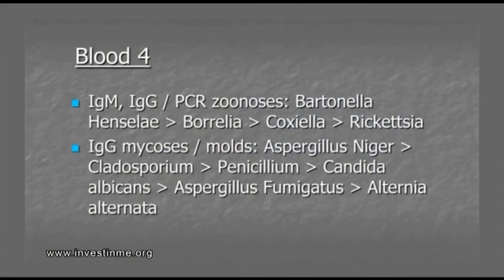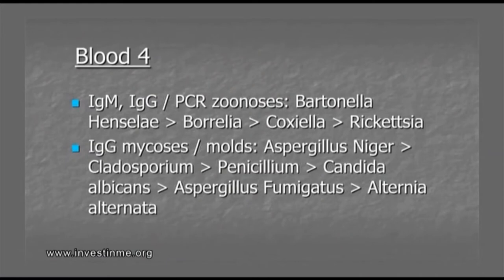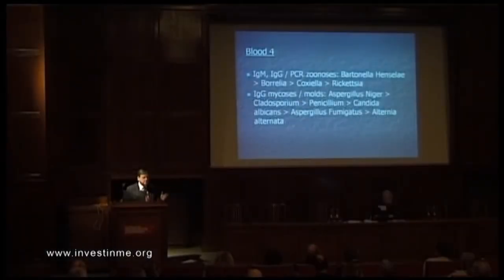These patients cannot get rid of intracellular infections. More than Borrelia, we see people with chronic infections with Bartonella, and also patients with Coxiella and Rickettsia. In Belgium, it's supposed to be two to four percent of people infected with Bartonella in the normal population, but it's higher than expected in our patients. We also see a number of patients exposed to molds — Aspergillus niger, Cladosporium, and so on — which for ME patients is another mechanism of chronic immune activation that could further deregulate the pathophysiology.